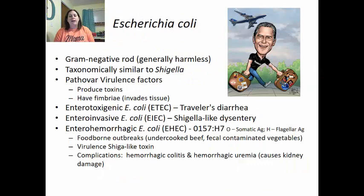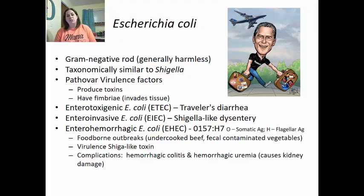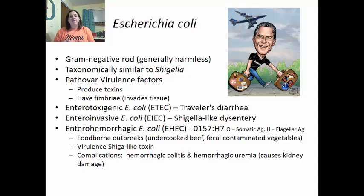Escherichia coli is a gram-negative rod that is generally harmless and found in your large intestine, but it is taxonomically similar to Shigella and is sometimes called traveler's diarrhea. It can have pathogenic virulence factors including toxin production and fimbriae that help invade tissue. Enterotoxigenic E. coli (ETEC) is traveler's diarrhea. Enteroinvasive E. coli (EIEC) is Shigella-like dysentery. Enterohemorrhagic E. coli (EHEC), the O157:H7 strain, has the O somatic antigen and H flagellar antigen. It causes foodborne outbreaks from undercooked beef and fecal-contaminated vegetables, with Shigella-like toxin causing hemorrhagic colitis and uremia leading to kidney and colon damage.